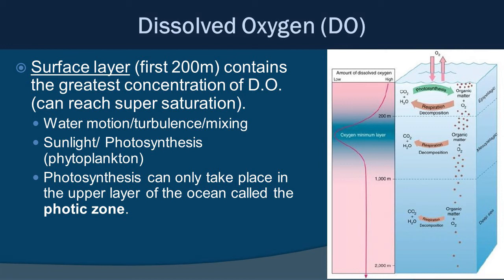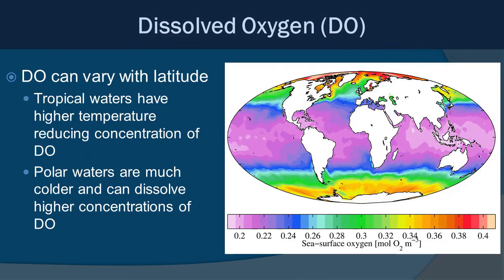It can actually reach what we call supersaturation, meaning there's a lot of oxygen available. This is because there's a lot of water motion and turbulence at the surface, which allows significant gas exchange with the atmosphere. Also, this is the photic zone where sunlight drives a lot of photosynthesis, producing a lot of oxygen. Looking at surface DO globally, tropical waters have higher temperatures and thus reduced dissolved oxygen, whereas polar regions are much cooler and can hold higher concentrations of DO.